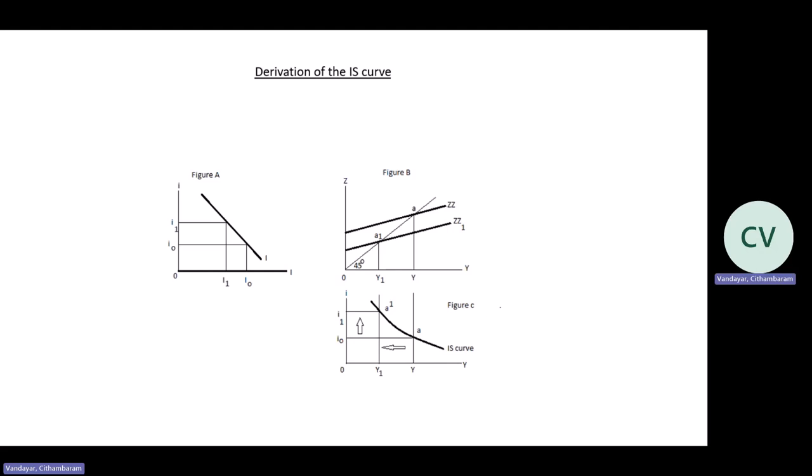Remember, the 45-degree line represents points of equilibrium between Z and Y. So A is on the 45-degree line — that is your equilibrium point. If you drop that line to the Y axis, you get your Y, which is your equilibrium level of income and output. So remember, if your interest rate changes, your level of income and output will also change.